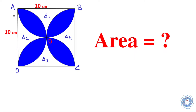Now we know the area of the semicircular region AOB and the semicircular region COD. If we eliminate these two areas from the area of the square, then we get the area of delta 2 plus delta 4. So let us write that down.